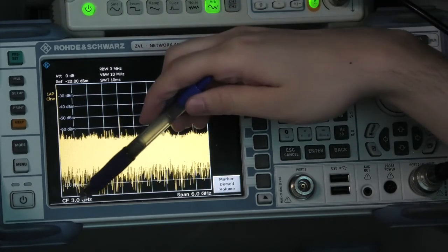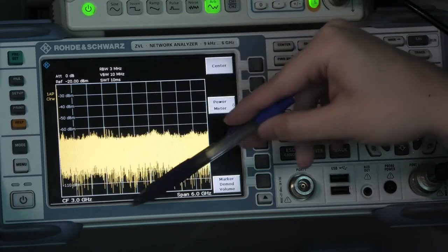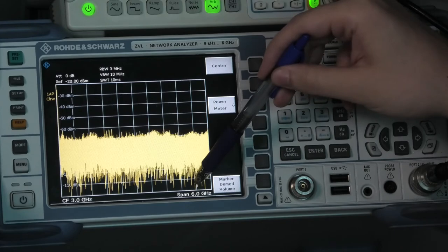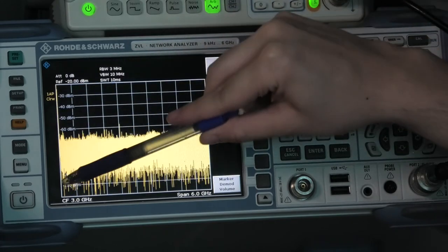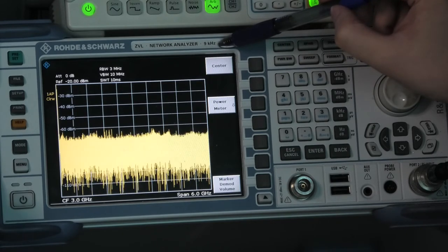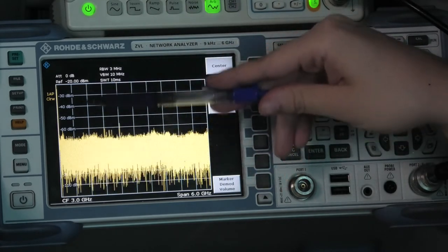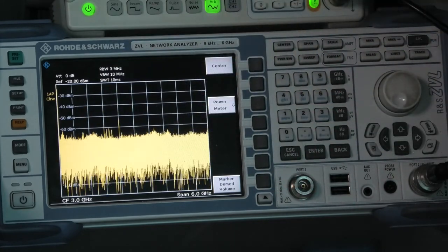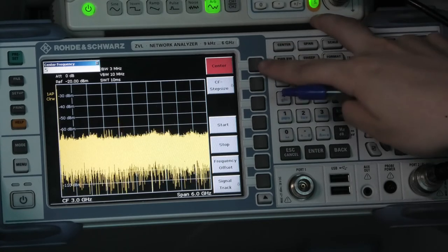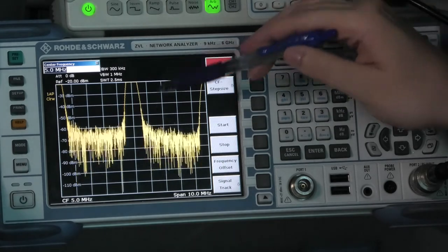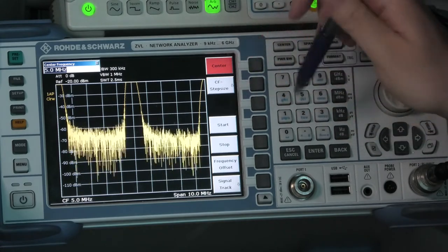For orientation, on the x-axis you can see the frequency. CF is the abbreviation for center frequency, which means that here, the middle line here refers to 3 gigahertz. The span is set with 6 gigahertz, which means here on the right we have 6 gigahertz and here on the left we have a very low frequency, which is about 9 kilohertz. So the lowest possible value, which we can measure with this device here. On the y-axis we see the power referred in dBm, so it's a logarithmic scale here. And now we know our base frequency, which is at 5 megahertz. So let's type in here with the center frequency of 5 megahertz. And we found the signal here now.